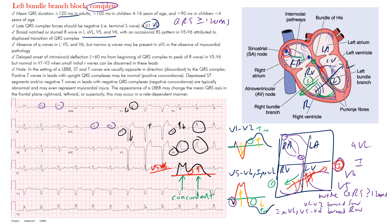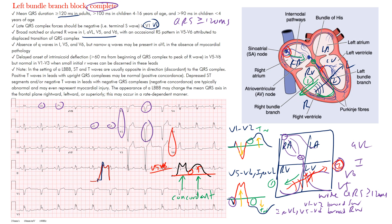There may also be a delayed intrinsicoid deflection — the time from the beginning of the QRS to the peak R wave in the left lateral leads — which may be delayed over 60 milliseconds. This means there is a delayed upstroke from the beginning of the complex to its peak. The main findings to recognize are those deep S waves in V1 and V2 and the broad or notched R waves in V5 and V6 — almost the opposite of what you see in right bundle branch block. This pattern is pathologic and important to be aware of.